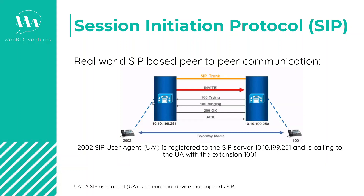The receiving server would respond with a trying automatically, and then respond with ringing once 1001 started ringing. Then 1001 would send back a 200 OK once the invite has been processed and the request was successful. Once the 200 OK is sent back to 2002, the two-way media would be established.